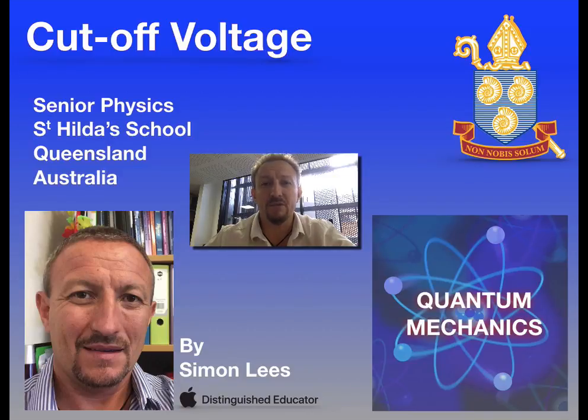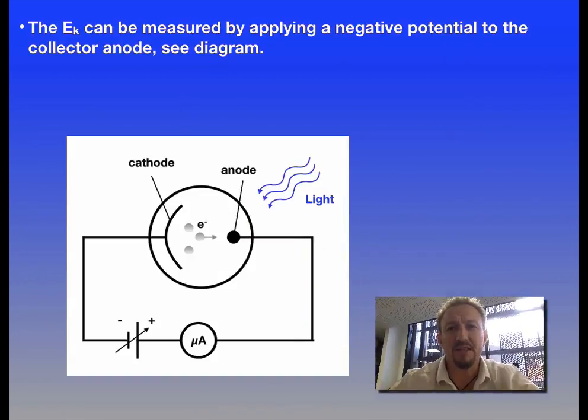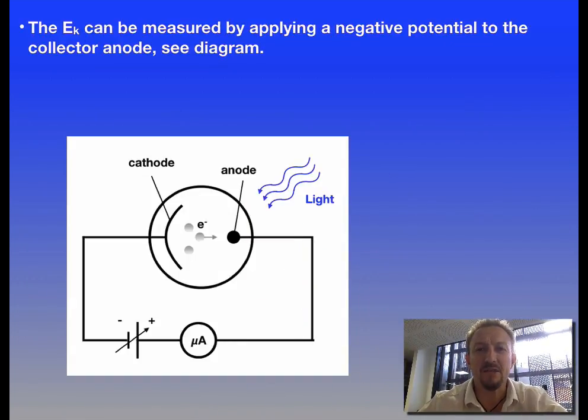So what is cut-off voltage? Well cut-off voltage is basically the process where we can determine the kinetic energy which is present in the electrons which are flowing across from the cathode to the anode.